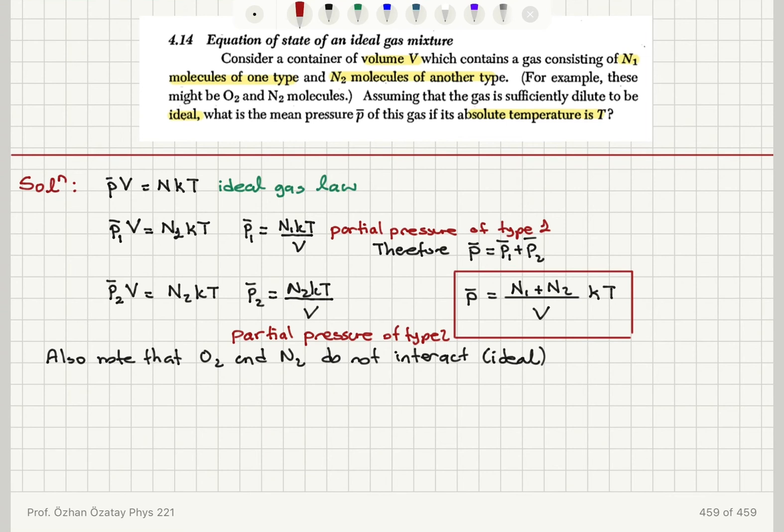By applying the ideal gas law twice and substituting for P̄₁ and P̄₂, we obtain the final result: P̄ = (N₁ + N₂)kT/V, the total number of molecules divided by the volume V multiplied by Boltzmann constant k and absolute temperature T.